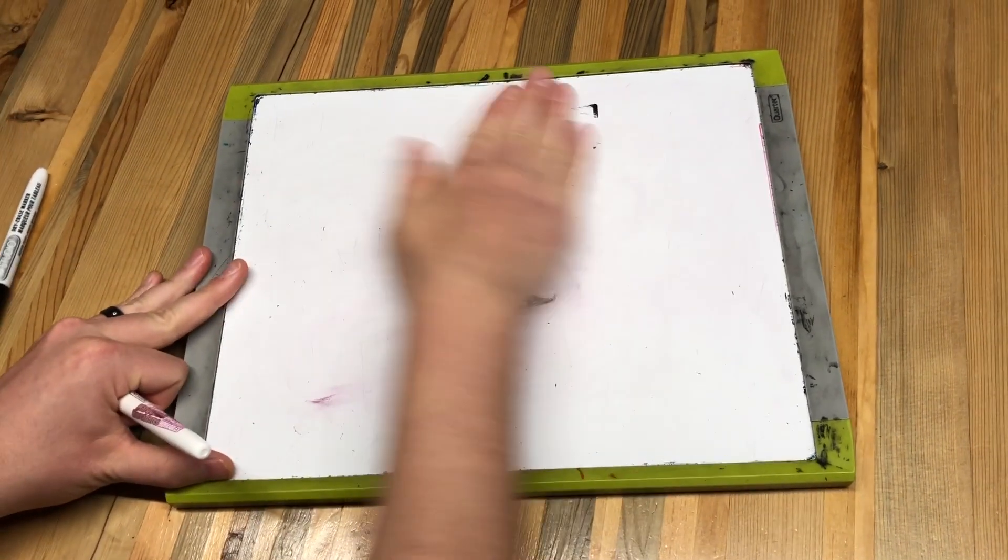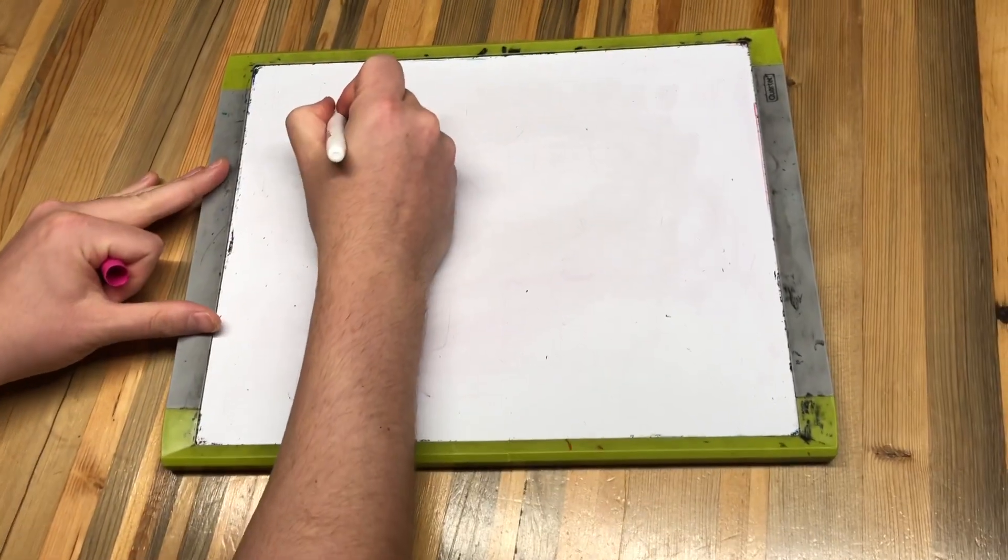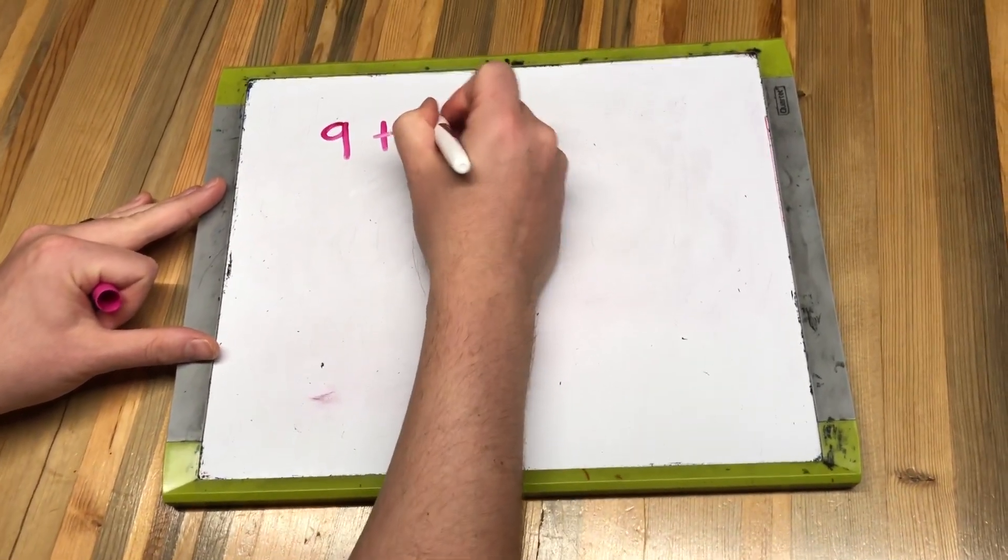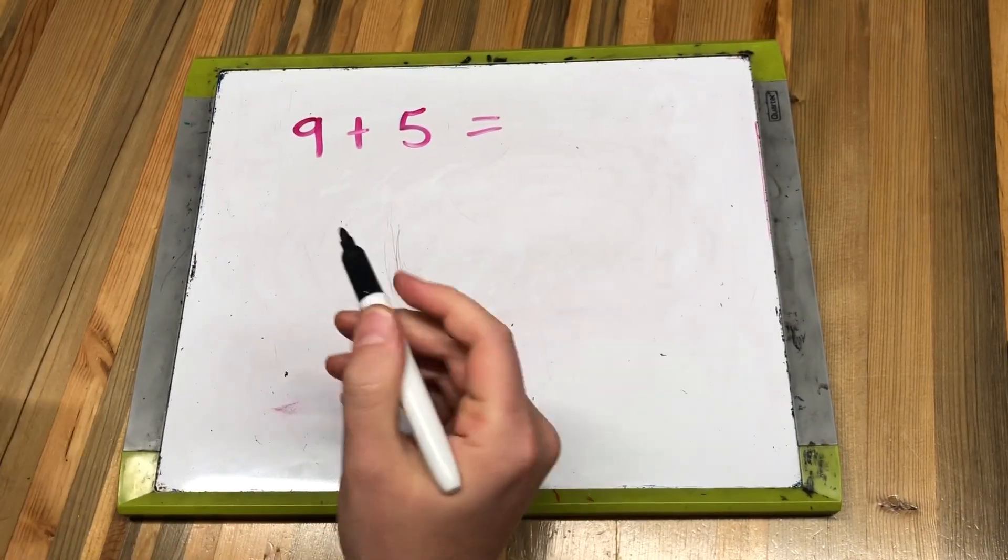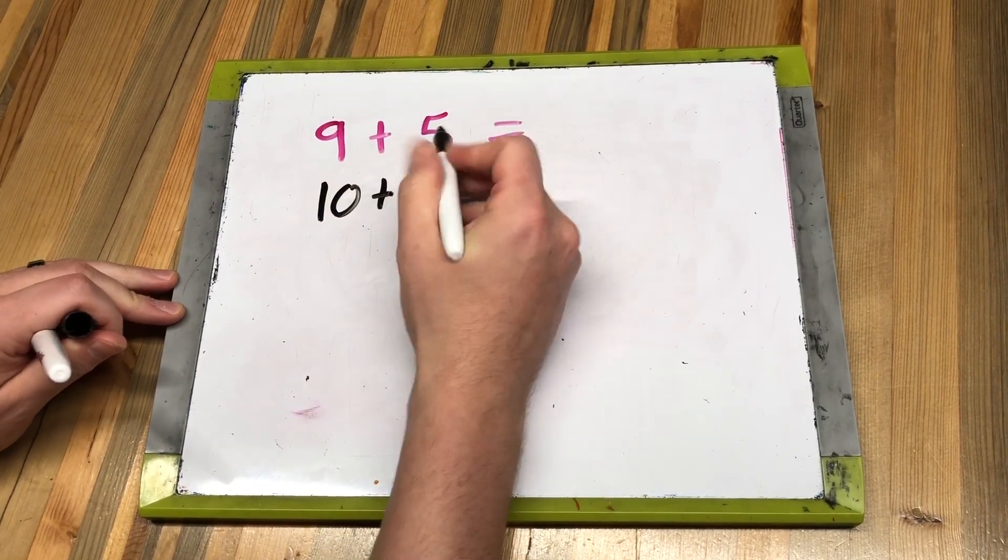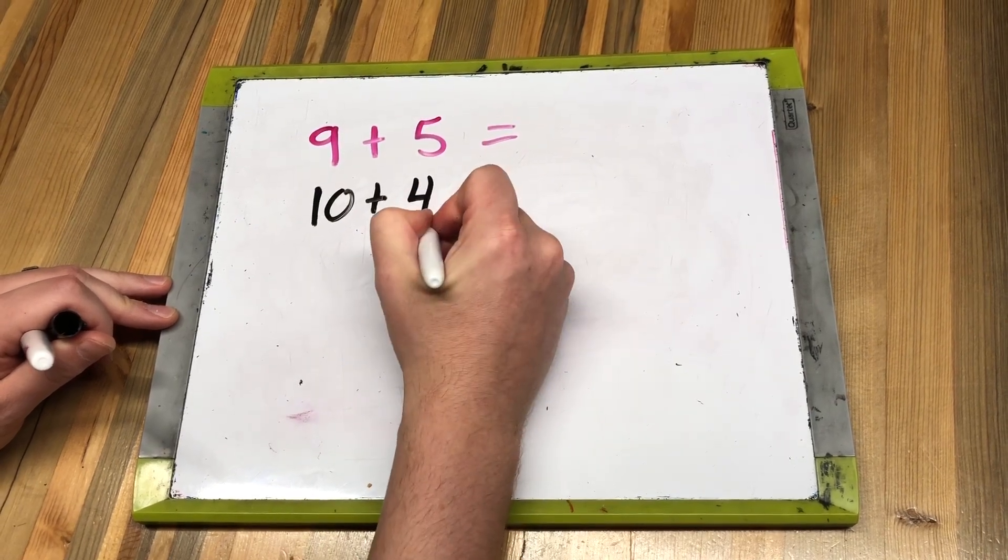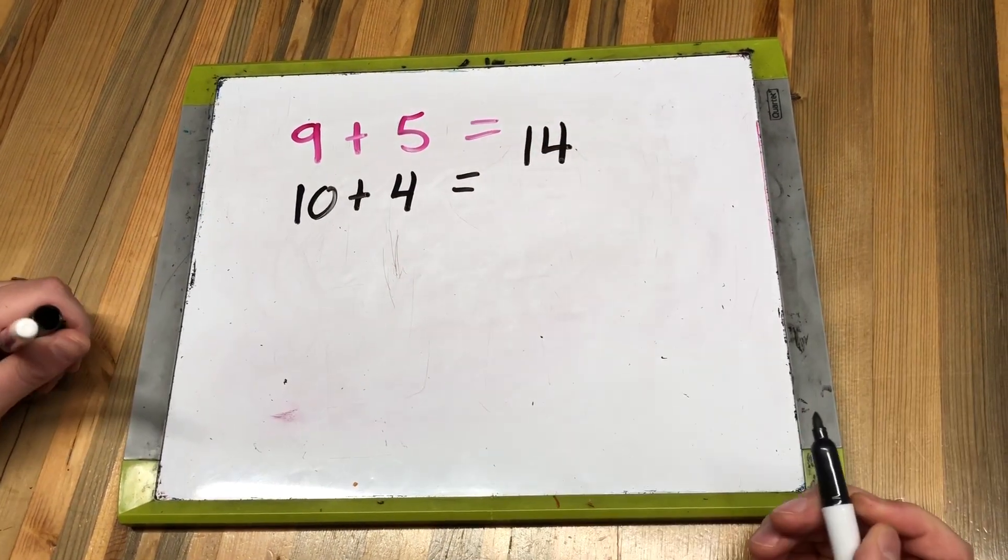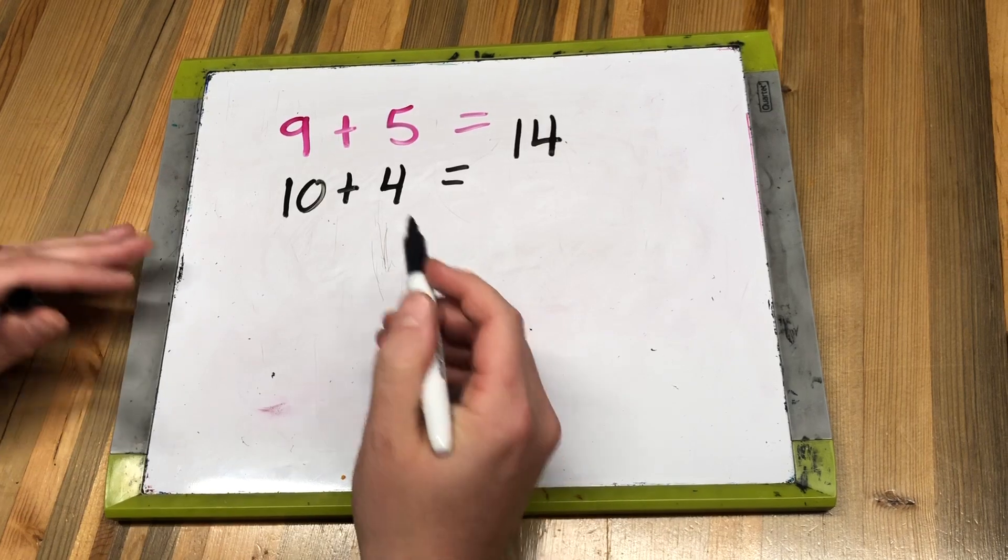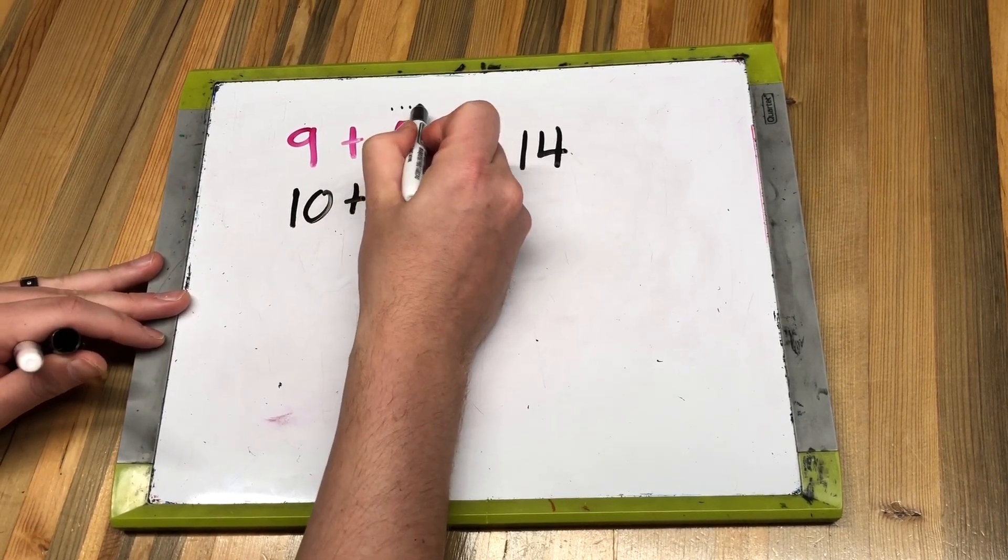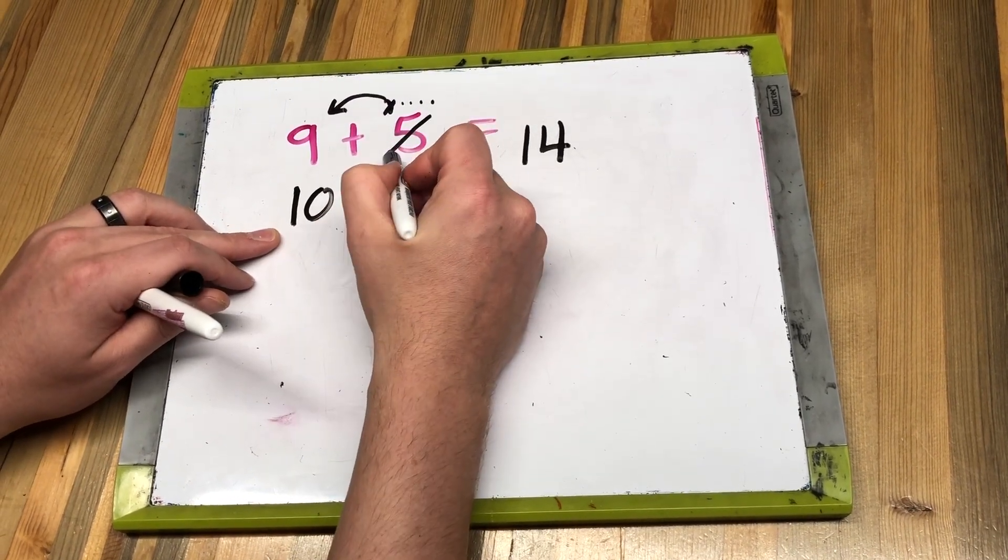Let's try a couple more. You don't always have to draw the dots, but let's just practice. Nine plus five. In my head, I'm thinking ten plus one less than five, because I'm bringing one of those over here. Ten plus four equals fourteen. Again, in your head you're doing this really quickly, but what you're really doing is taking one of the ones here, bringing it over here to turn this into a ten, but you don't have five anymore, you have four.